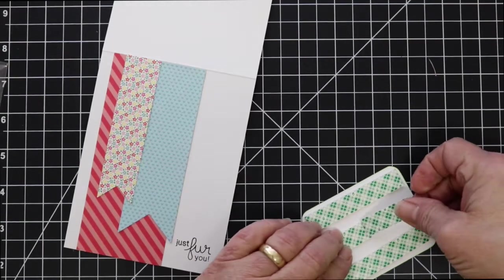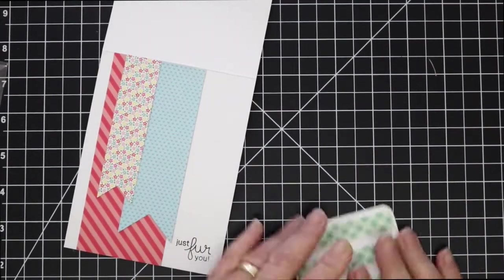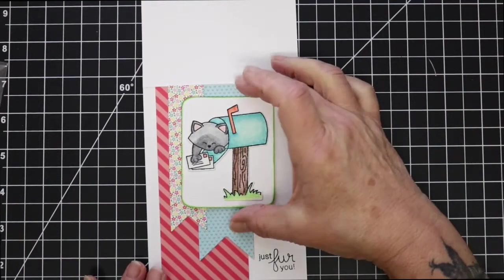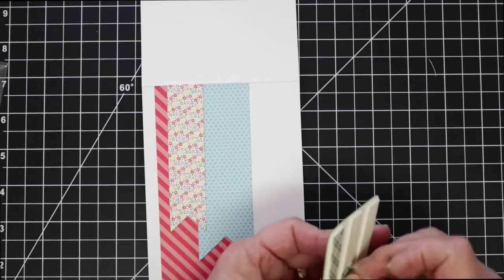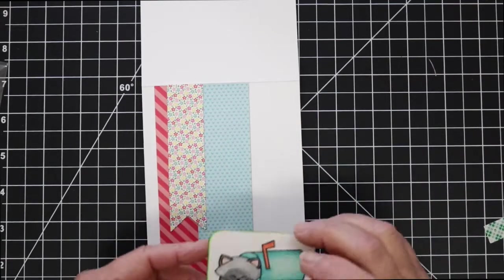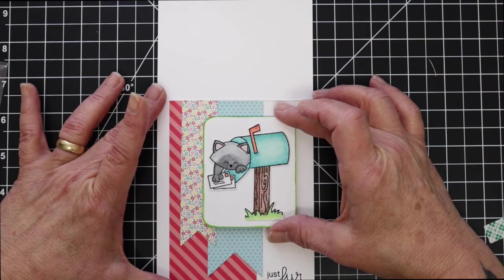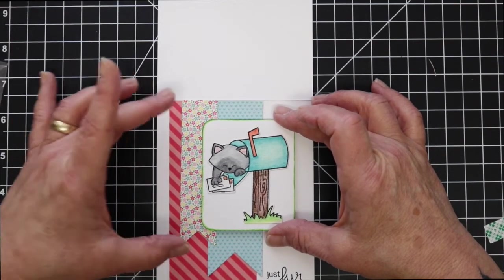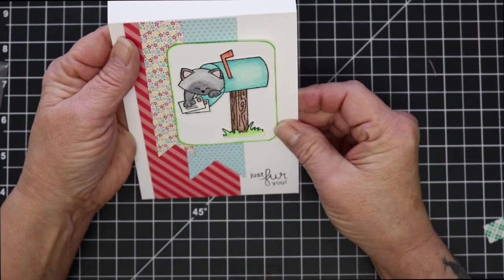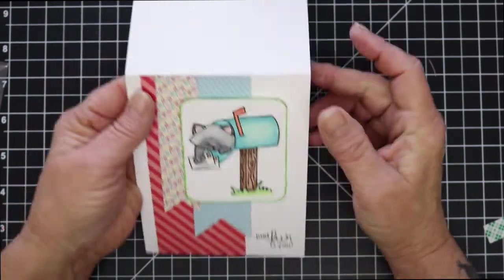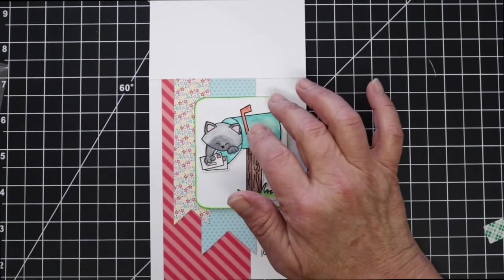I'm using some scotch foam tape to put on the back of my Newton just to pop him up off the page a little bit. I'm going to get him positioned where I want him to stay and then I'm going to look at it from the front perspective, make sure I have it straight, and then I will push it down.